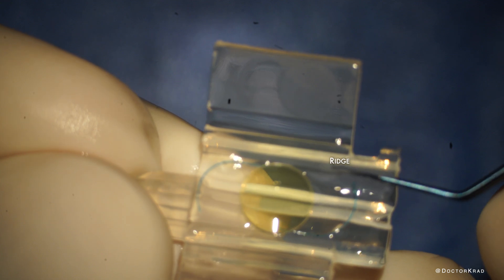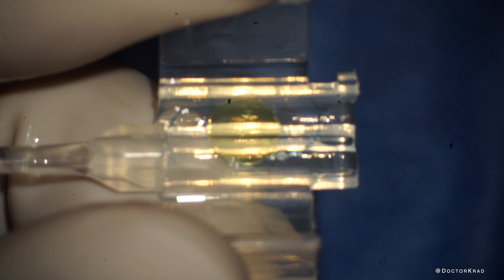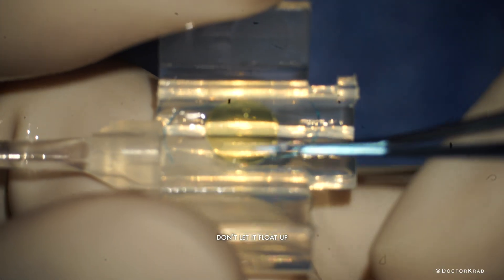It's very important to note the location of these ridges. The edge of the optic needs to be tucked under these ridges. As you close the flaps the lens will tend to float up. So you want to make sure it doesn't float up above these ridges.